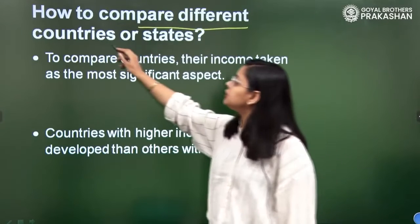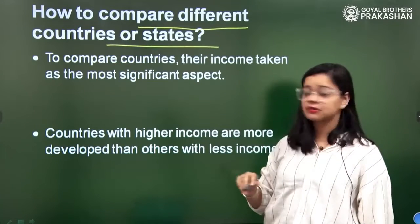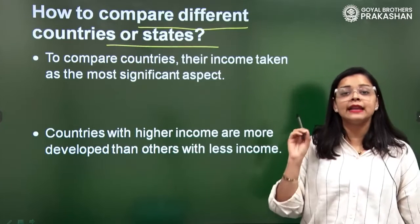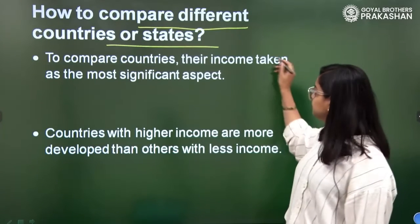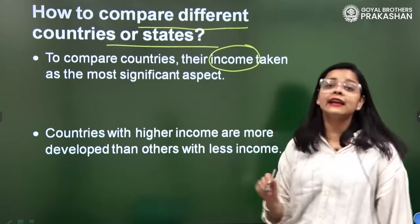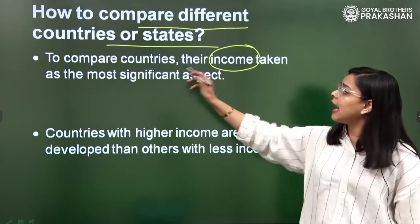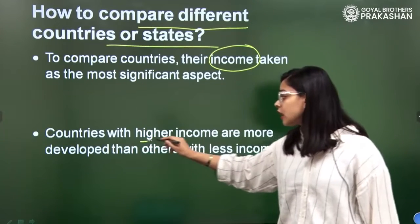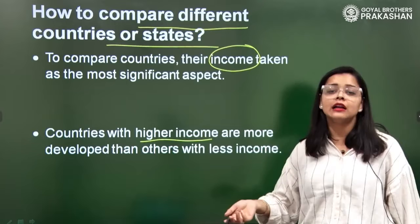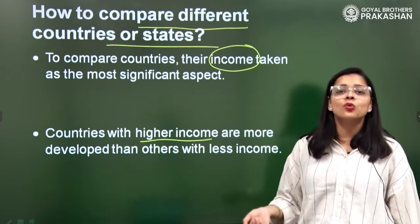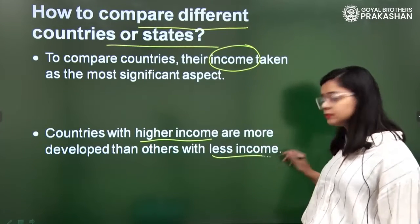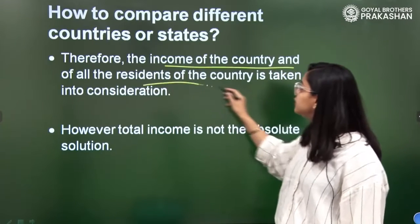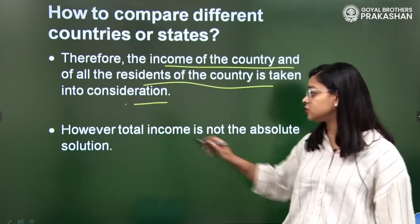How do we compare different countries and states? The one basic way of comparing countries and states is income. We take income into consideration, and that is how we compare different countries and states. Countries with higher income are called better than those with lower income, so the income of a country and all its residents is taken into consideration.